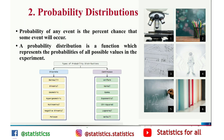The second topic is probability distribution. The probability of any event is the percentage chance that the event will occur. In data science it is commonly quantified in the range of 0 to 1, where 0 means we are certain the thing will not occur and 1 means the thing will occur. A probability distribution is a function which represents the probability of all possible values in the experiment. There are two types of probability distribution: discrete and continuous.